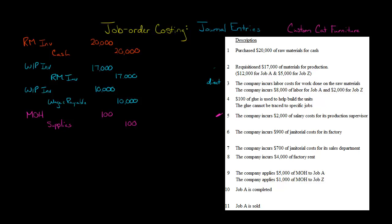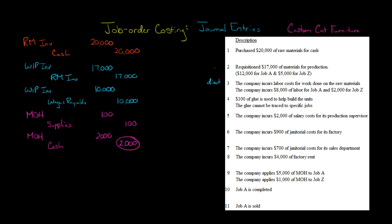Transaction five: we incur $2,000 of salary costs for the production supervisor. Because this person is supervising production, this is a manufacturing cost, but it's not direct labor since they're not actually building our product — so it's manufacturing overhead. We're going to debit manufacturing overhead and credit cash for $2,000, assuming we paid cash.